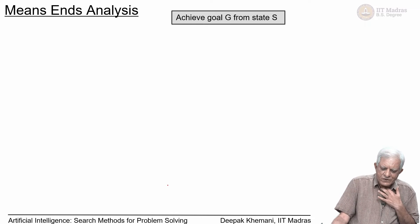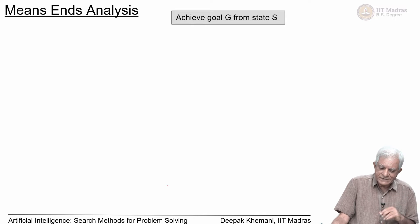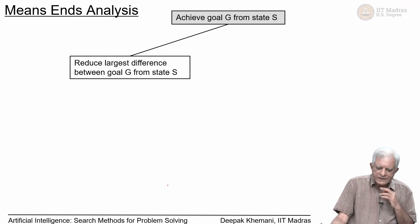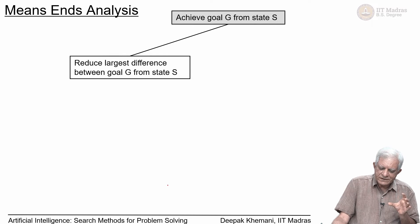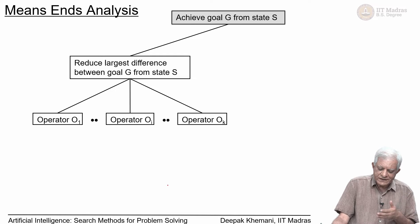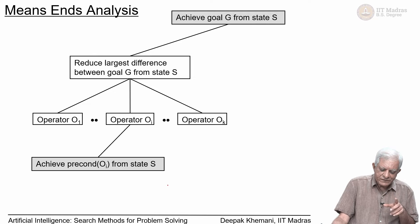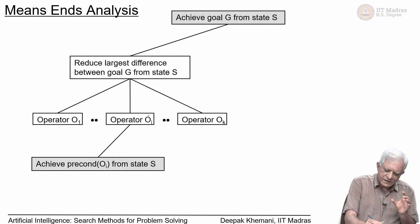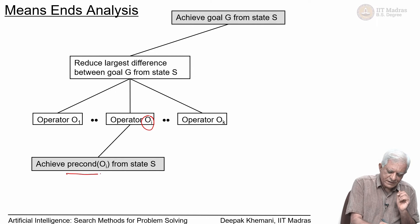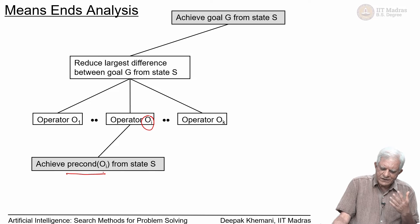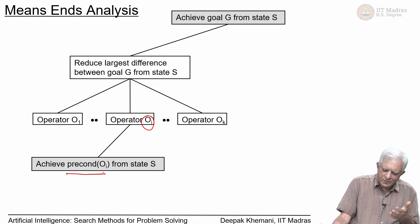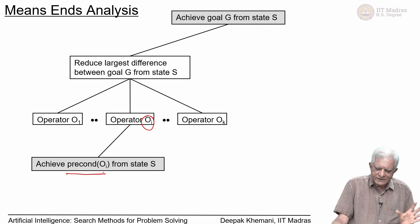The general approach is: if you want to achieve goal G from some given state S, reduce the largest difference between the goal G and state S. You look for operators that can do this. Say there are K operators — operator 1 through operator K — and you choose one, say operator O_i. To apply that operator O_i, you must first achieve its preconditions. In some sense this has a backward flavor: you can only apply an operator if its preconditions are made true, while you are still in state S.